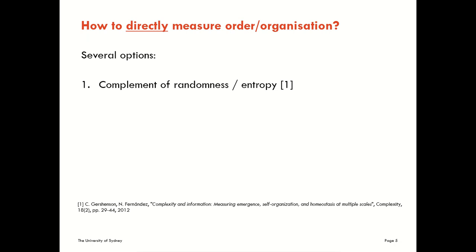Gershenson and Fernandes suggested that we could use the complement of randomness or entropy to measure order. And at face value, that seems to make a lot of sense. For me though, it's not the measure of order or organisational structure that we should really use going forward as our main way of quantifying that concept, basically because it's too simplistic — it misses higher order structure in the system. It only takes a very basic view of that.